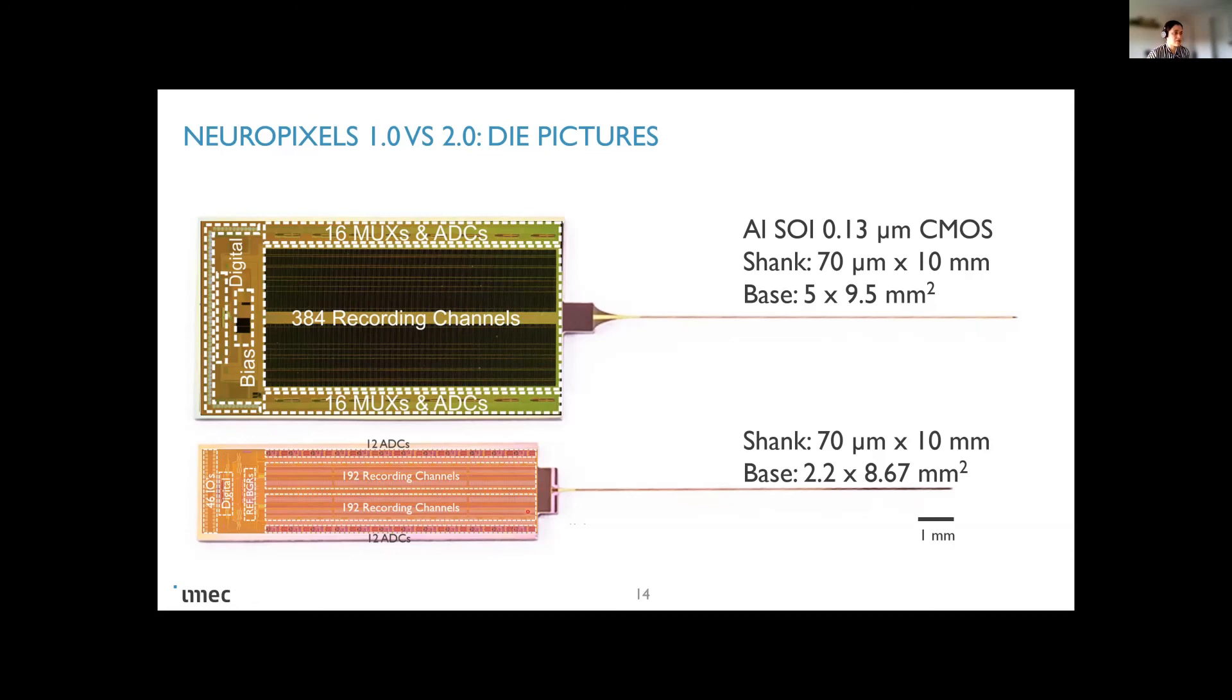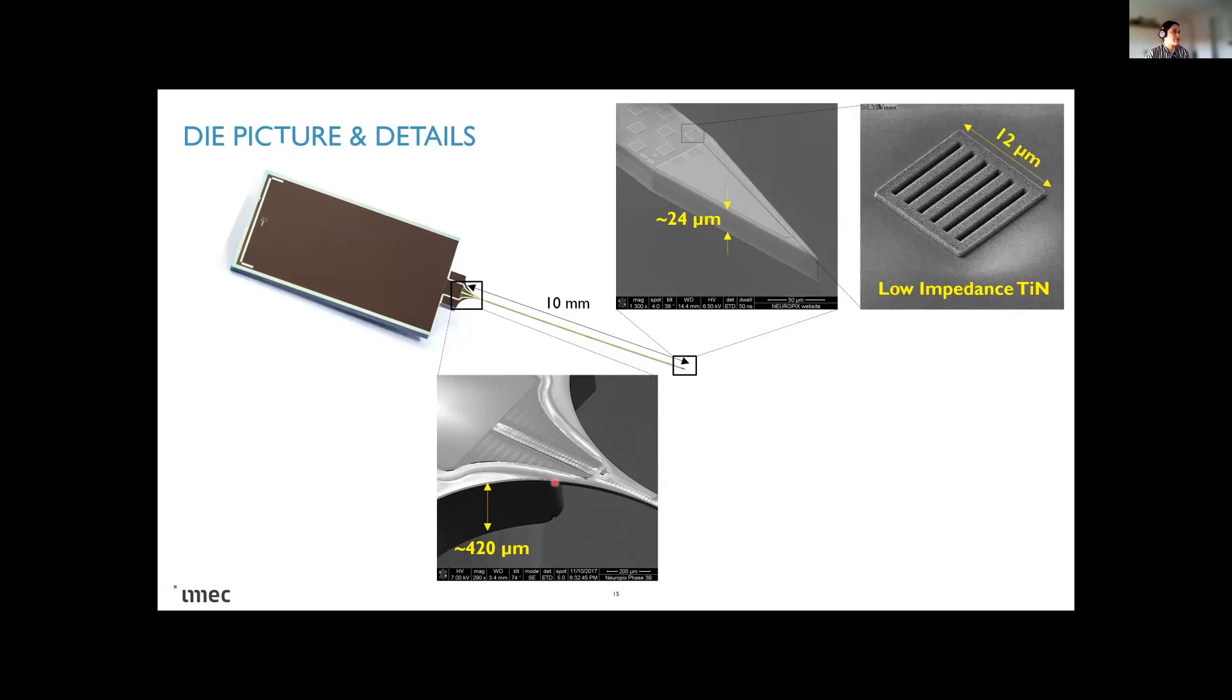As Matteo mentioned, there is also a multi-shank version of 2.0. So we have actually two versions available, single shank and a multi-shank. And here are some details of the device. So one of the characteristics of Neuropixels probe is that we managed to develop a very low impedance electrode material that is also very stable. So when you have a thousand electrodes in the shank, actually the performance of those electrodes, their characteristics are very uniform. And that was very important also to guarantee that the signal quality that you record is very good.